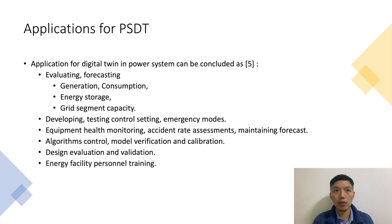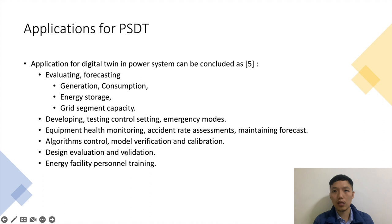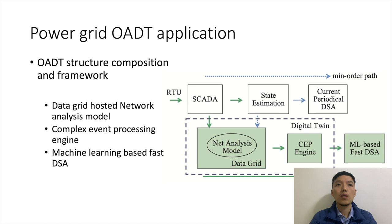Now we've talked about the framework to develop a digital twin for power systems. Let's look at its applications. One research categorized applications in the following areas: evaluating or forecasting generation, consumption, storage, and different capacities; testing control settings and different modes; health monitoring; assessments or maintenance forecasting; algorithm control, verification, and calibration; and design or personnel training purposes.